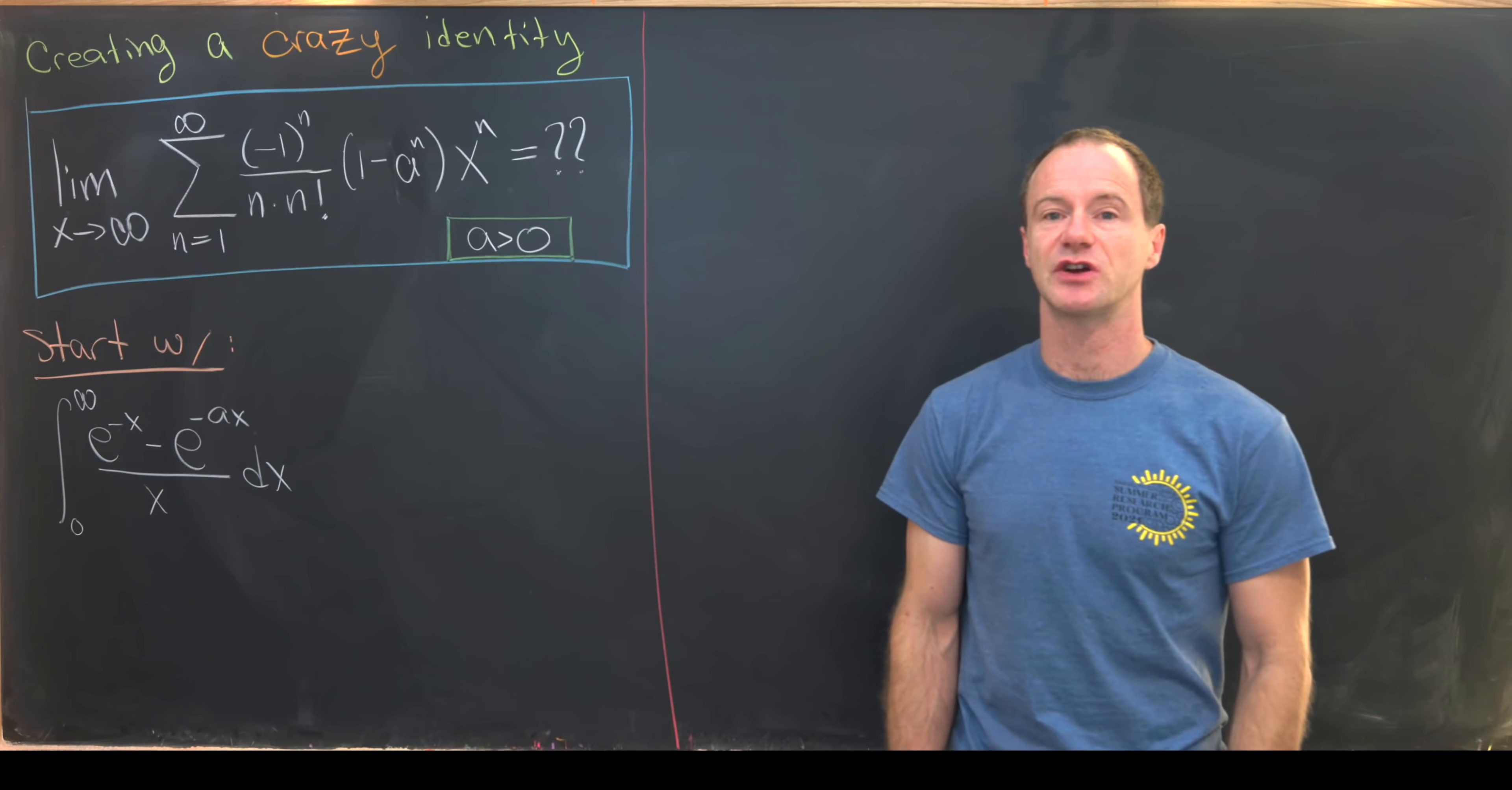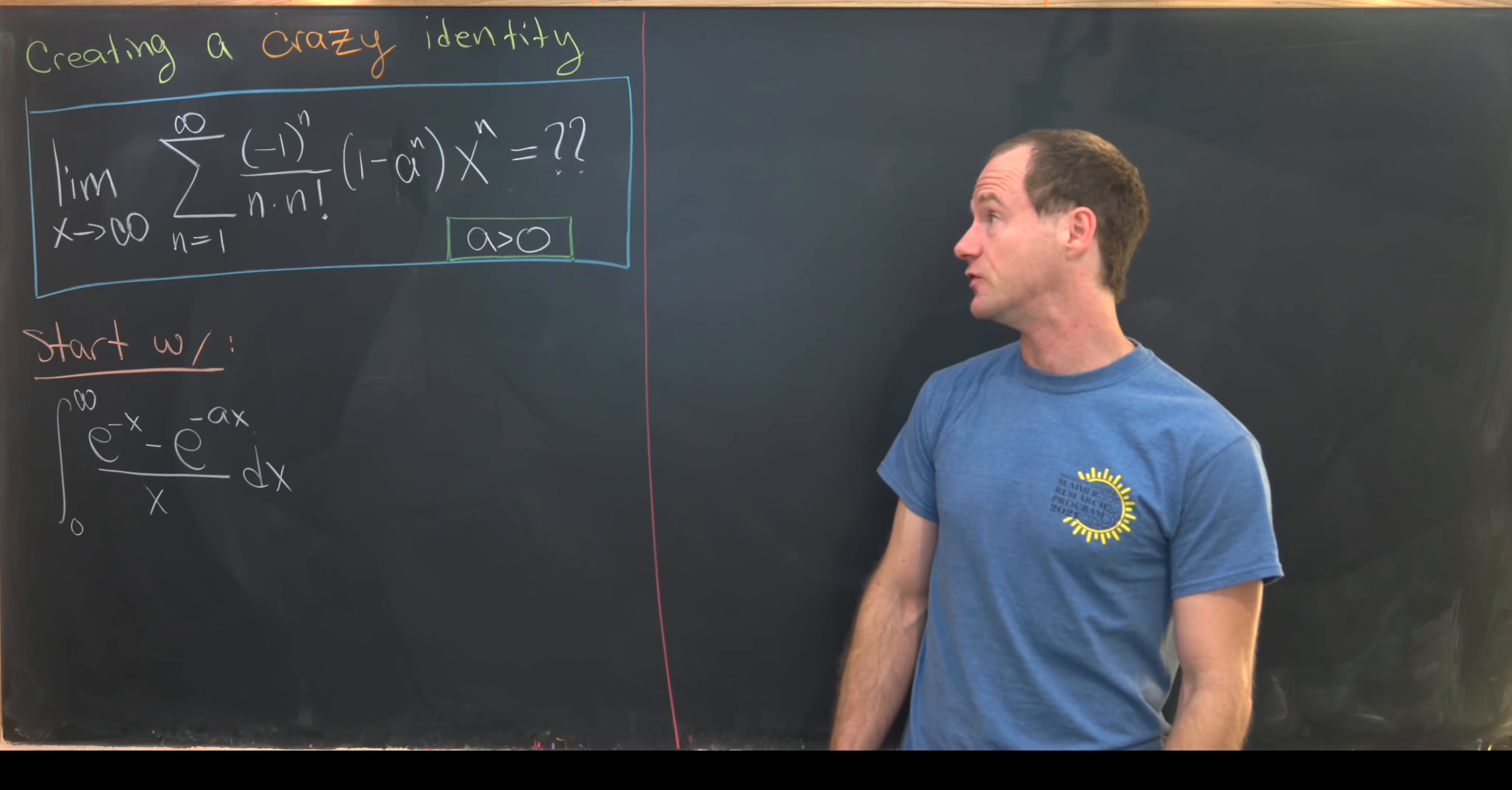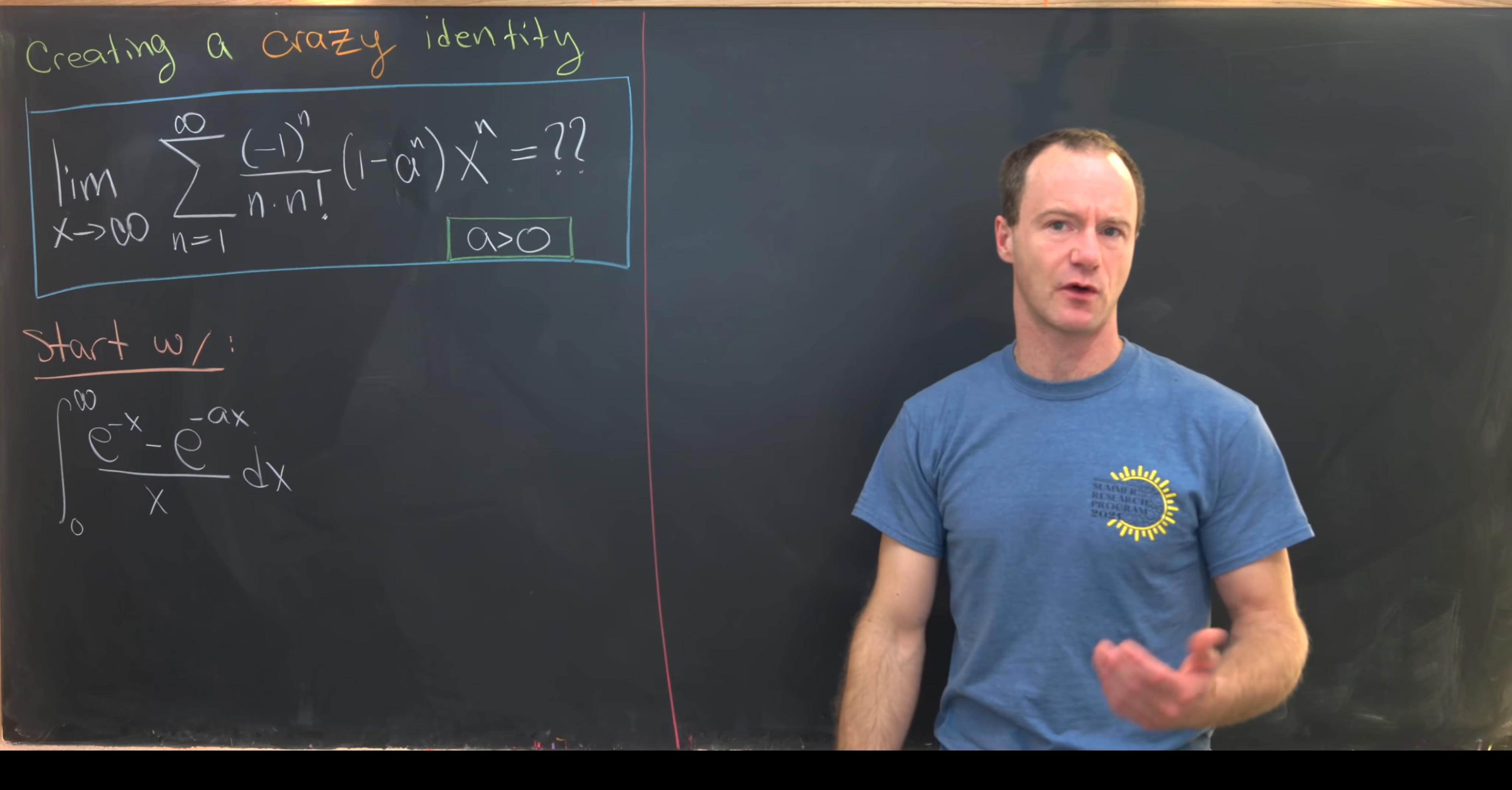Today I'm going to let you in on a trick for constructing these crazy types of identities that are often shown in math YouTube videos. We're going to focus on the object which is to the left of this equal sign with a question mark.